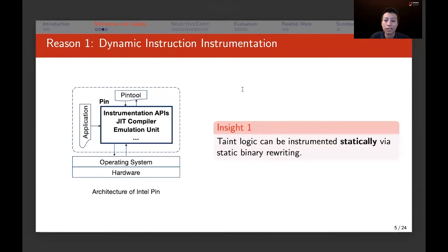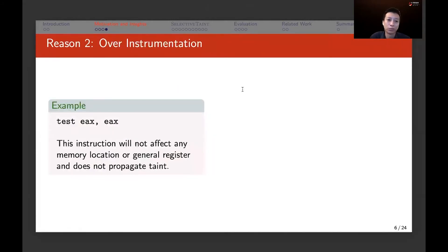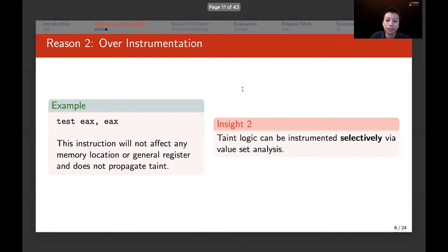Our first insight is to statically rewrite the binary to instrument the taint logic using static binary rewriting instead of dynamic instrumentation at runtime. The second reason for slowness is over-instrumentation — current tools instrument taint logic for every instruction. However, some instructions such as 'test EAX' only perform a logical AND and update status flags without propagating taint. Our second insight is to instrument taint logic selectively using value set analysis instead of instrumenting every instruction.